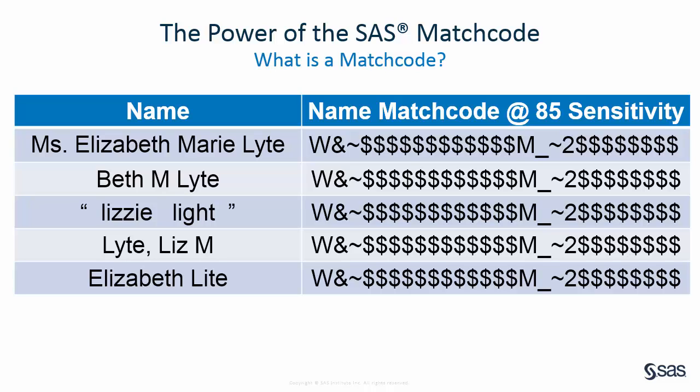A low sensitivity value generates a simpler match code. Simpler match codes generate more matches for strings that are less similar. Higher sensitivity values generate more complex match codes, hence fewer matches, which reflects a higher degree of similarity between strings. The example displayed here shows the match codes generated using the name match definition in the English language locale at a sensitivity setting of 85. Note that all the variations of Elizabeth Light generate the same SAS match code. Therefore, all of these names would be considered a match to each other.